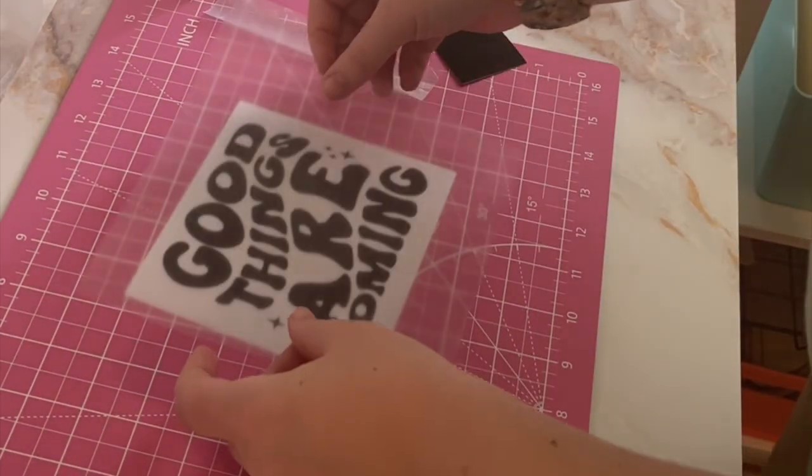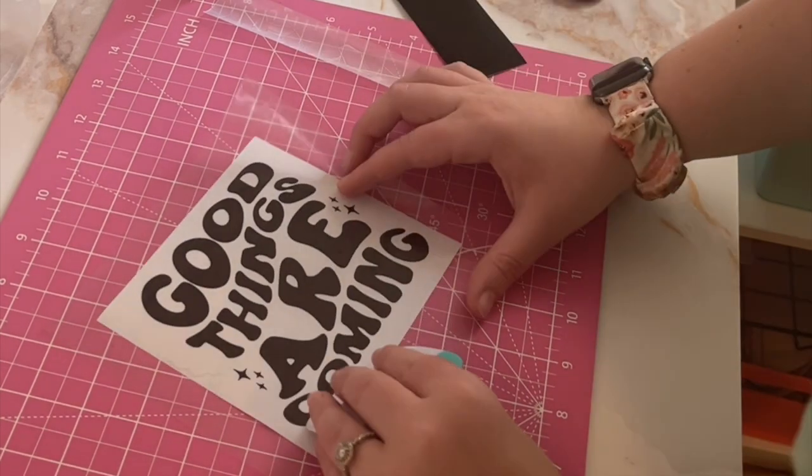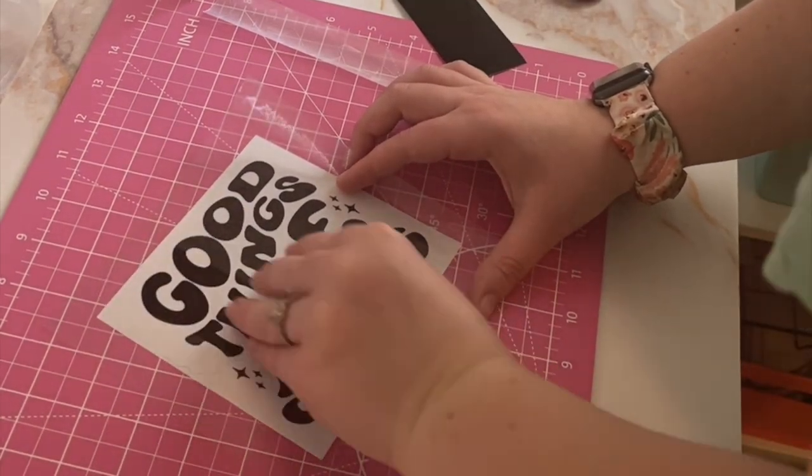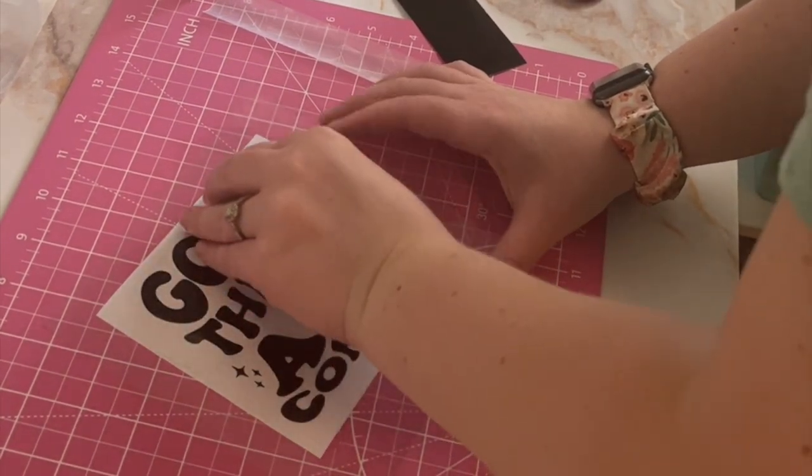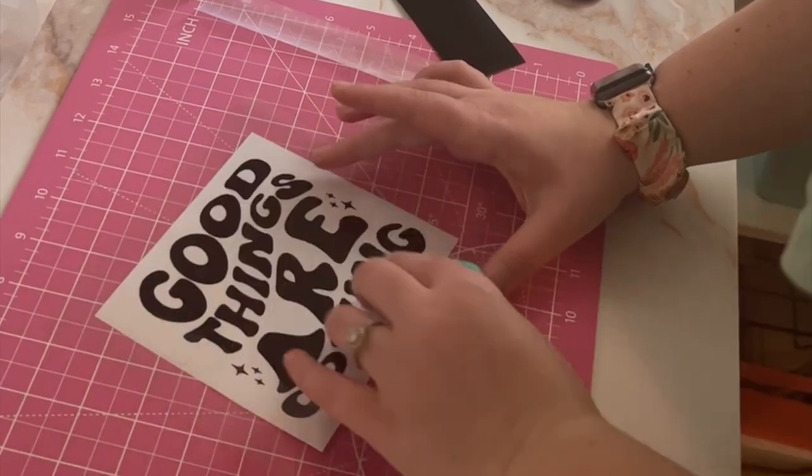I'm using the Oracle Transfer Tape and it's actually been used once or twice before this so it's not super super strong. I think that actually worked out good for the window cling because that is pretty flimsy.